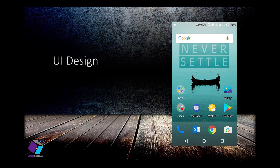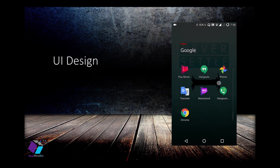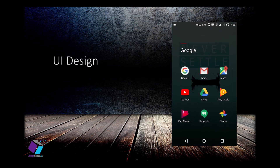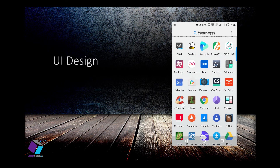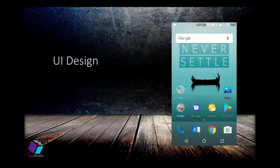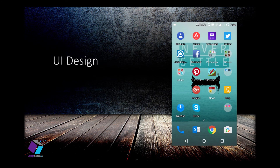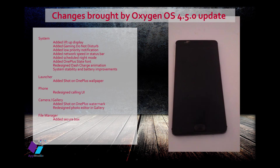Once you update your OS, the first thing you'll notice is the UI design is completely changed. The home screen icons and grouping folders are completely different from the previous version. It gives a smooth finish, and you can scroll through the app drawer to see all your downloaded apps. The size of each icon is also smaller than before.